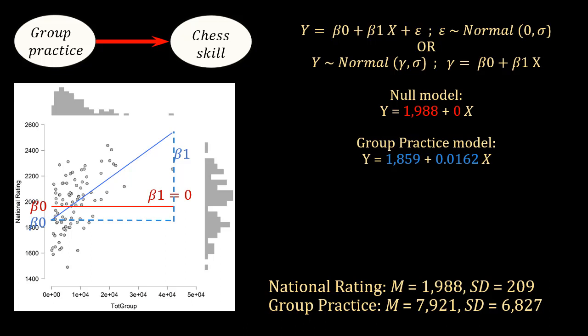And that line is generated by this formula. The intercept is 1,859 and the slope is 0.0162. So what's the intercept? The intercept is the value of Y that corresponds to an X of 0. So we've got 0 here. Beta 0 is the value of Y that corresponds to X equals 0 in this model. So that value is 1,859.